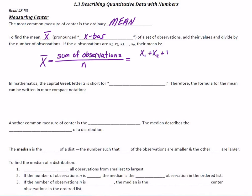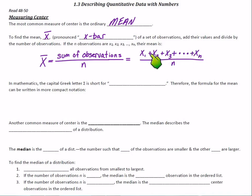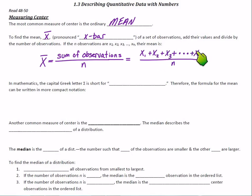Another way you might see it expressed — we call this the expanded form. Each one of these little x's is one of the observations: this is the first observation, the second observation. Think about your grades and how we take the average. Here's your third observation, all the way up to the nth observation. So if that's the ninth observation, for example, we would divide by nine — whatever n is, that's how many there are.